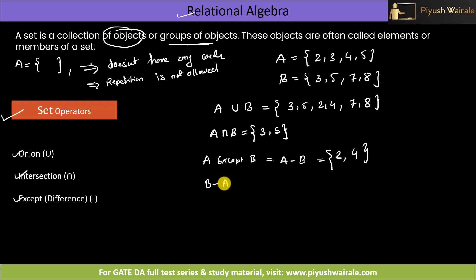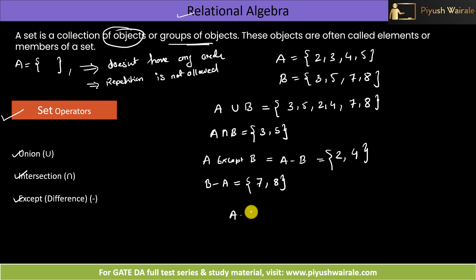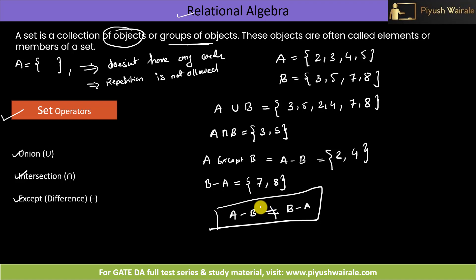What is B minus A? That is B except A — the elements of B not present in A. 3 is present in A, 5 is present in A, but 7 and 8 are not. So the answer is {7, 8}. One important point: A minus B is not equal to B minus A. But A union B equals B union A, and A intersection B equals B intersection A — both are the same.